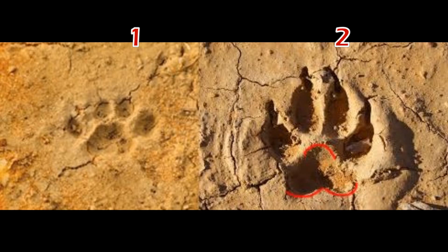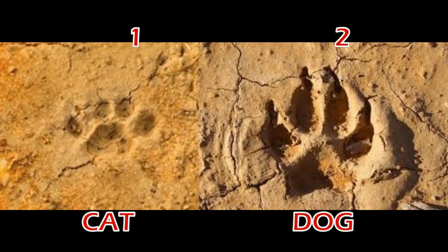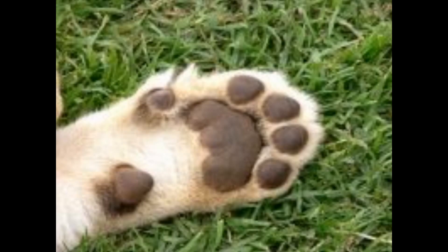Track number one is the cat track. The reason that claws rarely show in a cat track is because they pull them in, or retract them, unless they're using them — such as for balance on a slippery surface or for holding their prey.